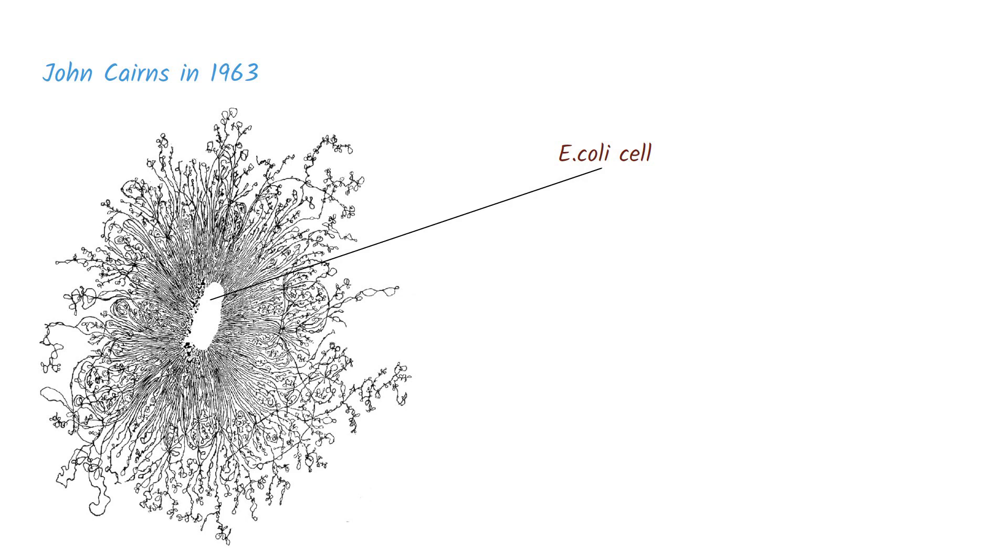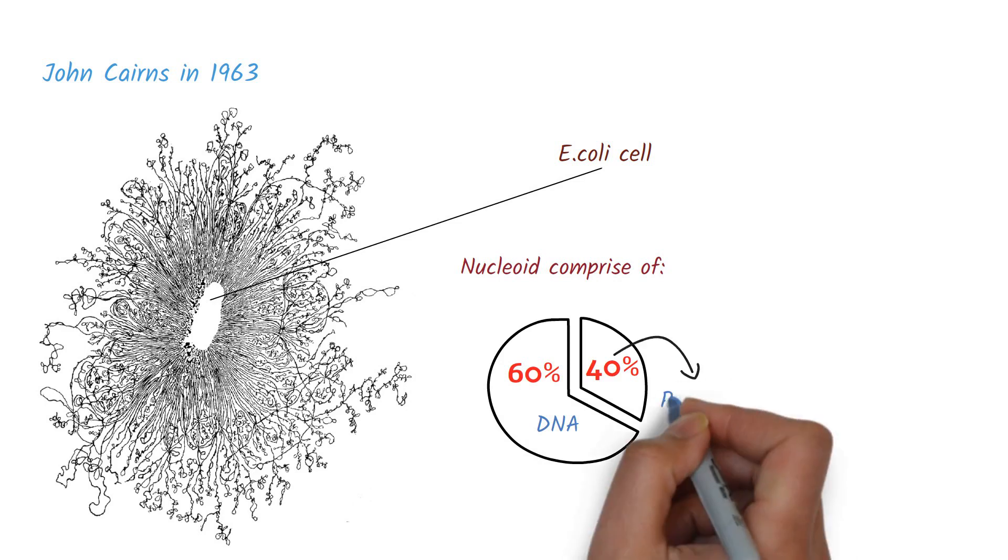The studies have shown that the nucleoid comprise of 60% of DNA, and the rest of the part comprise of protein and RNA.